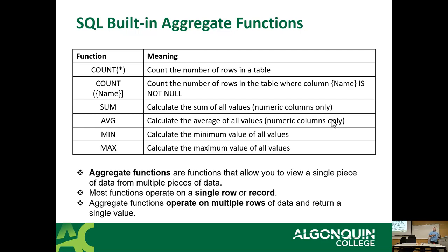Functions will either operate on a single row or on multiple rows. When we think about normal functions, we think about string functions or date functions — upper, lower, date conversions, casting — those operate on a single row. Aggregate functions operate on multiple rows of data and usually return a single value.